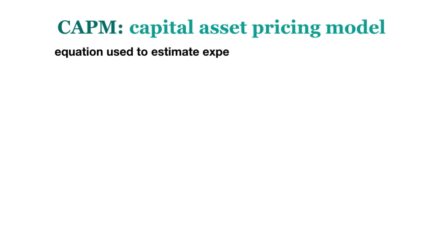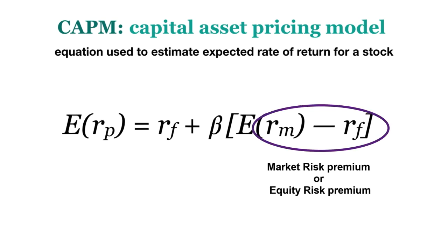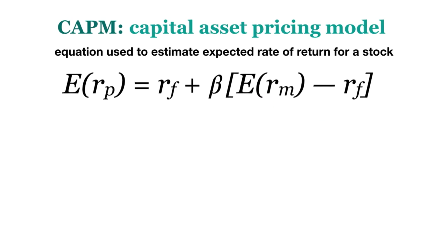CAPM stands for Capital Asset Pricing Model, which is an equation used to estimate the expected rate of return for a stock. The CAPM formula tells us that the expected rate of return for a stock equals the risk-free rate plus the beta of the stock times the difference between the expected market return rate and the risk-free rate, also known as the market premium. Let's go through each of these parts of the equation in more detail.